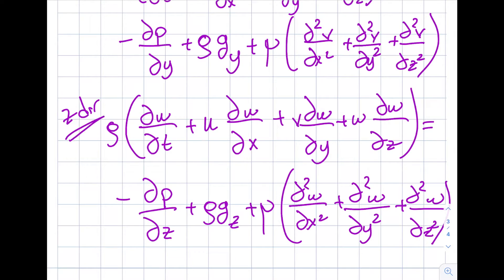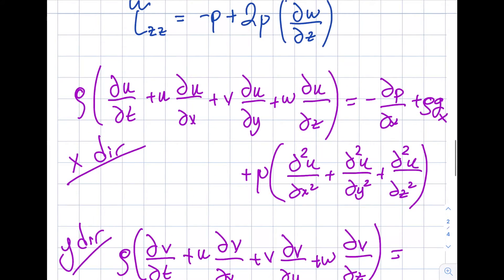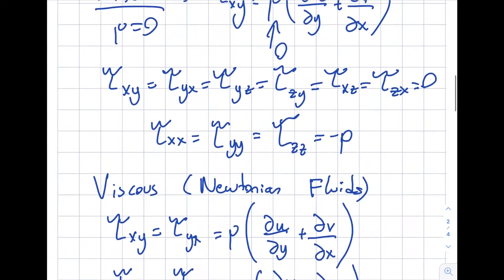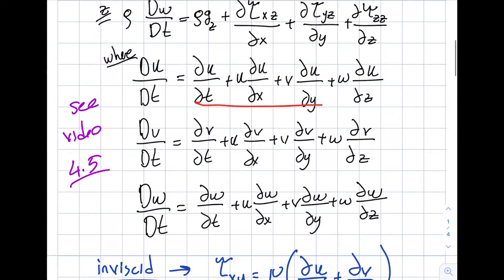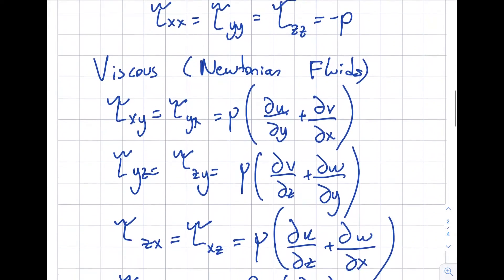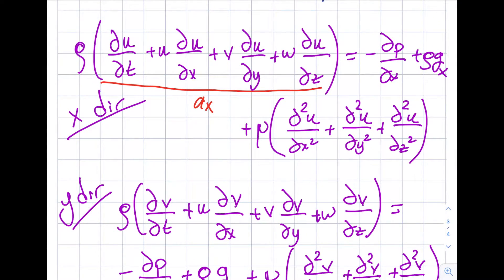I also wrote the z-direction equation to save time. Let's examine these equations starting with the x-direction. The left side is the acceleration in x from Video 4.5 — nothing new there. On the right, ∂p/∂x is the pressure gradient in x, and ρgx is the gravity component in x.